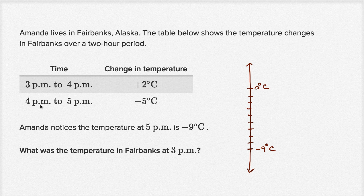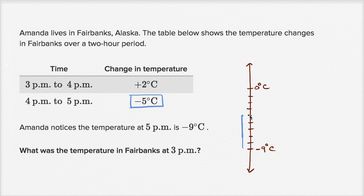From 4 p.m. to 5 p.m., the temperature dropped by five degrees Celsius, and that got us to negative nine. So we dropped by five to get to negative nine, which means we must have started five above negative nine — counting up one, two, three, four, five. That's that five degree drop, which is negative five degrees Celsius. So at 4 p.m., we must have had a temperature of five above negative nine, which is negative four degrees Celsius. That was the temperature at 4 p.m.